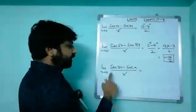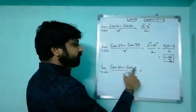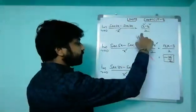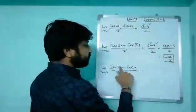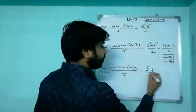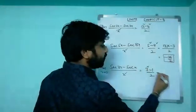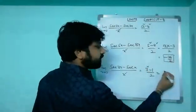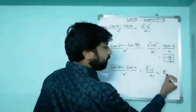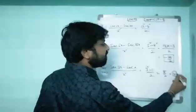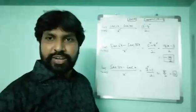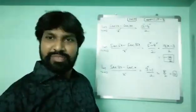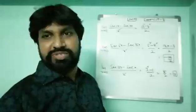Next: limit x tends to zero of [sec(3x) minus sec(x)] divided by x square equals (3² minus 1²)/2 = (9 minus 1)/2 = 8/2 = 4. Hardly two seconds for calculus — that's all for today, thank you very much!